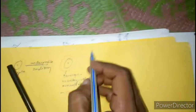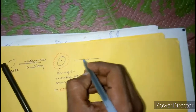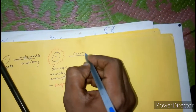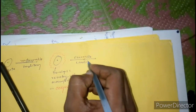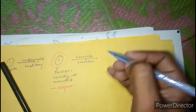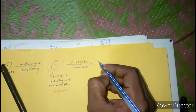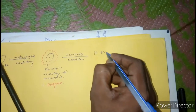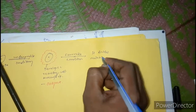But during favorable conditions, this resisting wall disappears. During favorable conditions, the resisting wall disappears and the zygote will go for mitotic division. It goes for mitotic division.